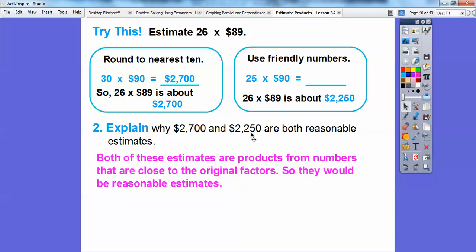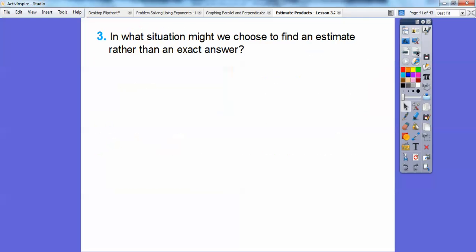So explain why 2,700 and 2,250 are both reasonable estimates. Well, both of these estimates are products from numbers that are close to the original factors. So they would have to be a reasonable estimate right there. This one's probably a little bit less. It might be a little bit more. And this one is definitely a little bit more. But it's because we rounded. So since our rounded numbers are close enough, then those would be good answers right there.